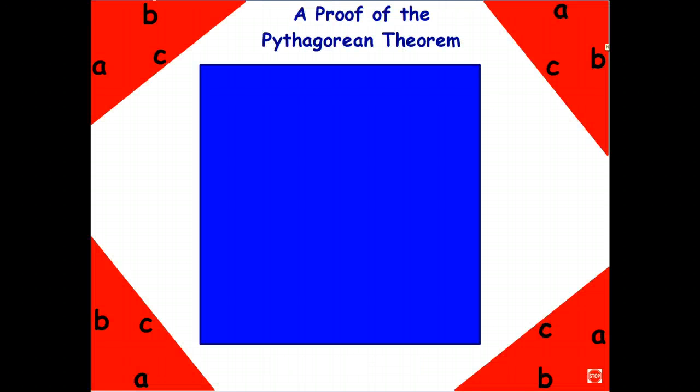Now this is going to be an actual proof. So what I'm about to do here, I could do for any sized right-angled triangle. Here I have a triangle with sides A, B, and C, where C is the hypotenuse.